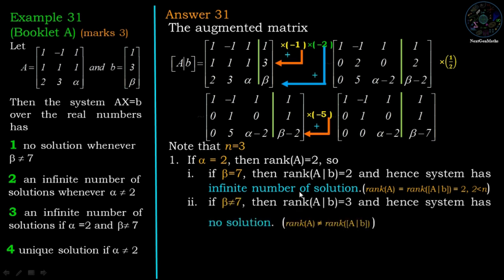Case 1b: if alpha = 2 and beta not equal to 7, the last entry in the augmented column is non-zero, so rank of [A|B] = 3 (three non-zero rows). But rank of A = 2, so rank of A is not equal to rank of [A|B]. Therefore the system has no solution.